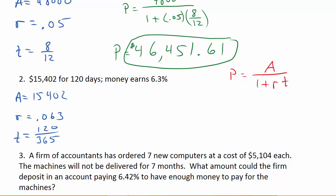Alright, so now let's plug everything into the formula. So P is equal to A, which is 15,402, over, and then 1 plus 0.063, that's R, times T, which is 120 over 365.